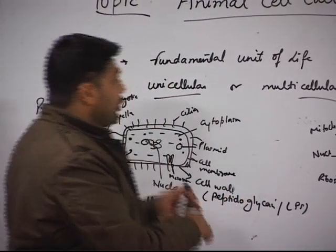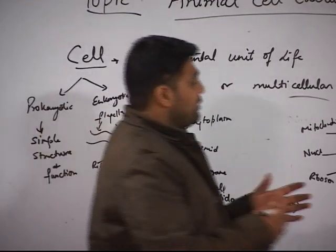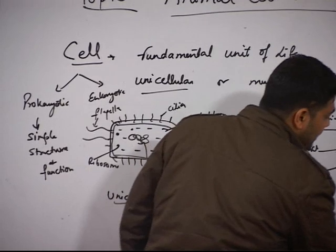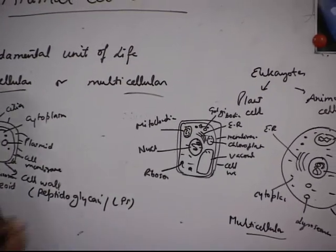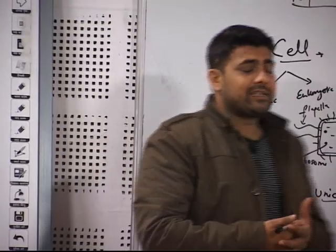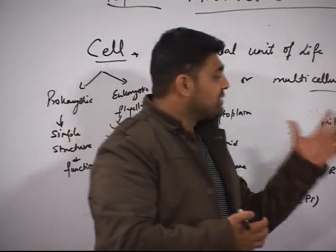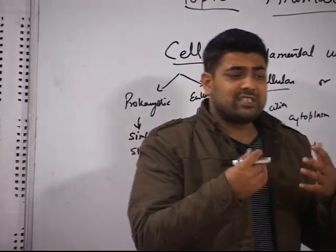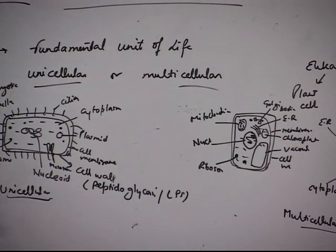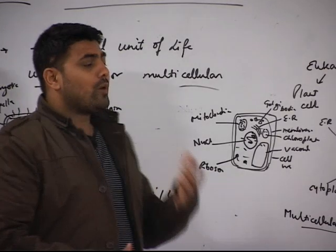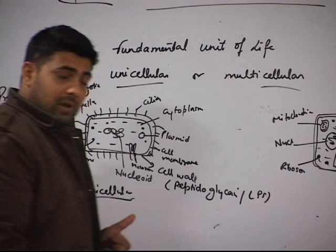Animal cell culture is a technique in which you culture animal cells. One important aspect is that plants and animals are mostly multicellular. Being multicellular, it is more difficult compared to prokaryotic cell culture. When you culture prokaryotic cells like bacteria, they are much simpler, requiring less expertise and less complex ingredients. Culturing plant and animal cells is more difficult because these cells generally occur as multicellular structures. Animal cell culture is more complex, more tedious, and more skill-oriented.